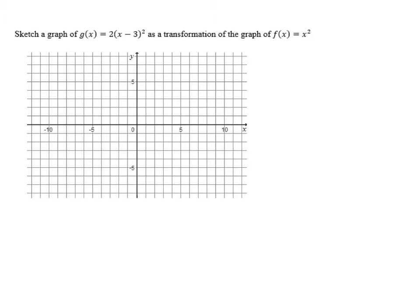Sketch a graph of g of x equals 2 times the quantity x minus 3 squared as a transformation of the graph of f of x equals x squared. We'll start with our original function f of x equals x squared, and we're going to see how we can turn it into our new function g of x equals 2 times x minus 3 squared.